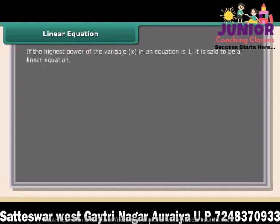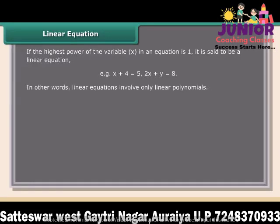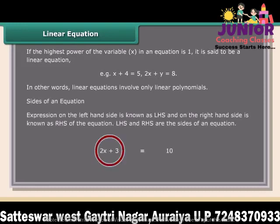If the highest power of the variable x in an equation is 1, it is said to be a linear equation. For example, x plus 4 is equal to 5, and 2x plus y is equal to 8. In other words, linear equations involve only linear polynomials. The expression on the left-hand side is known as LHS and on the right-hand side is known as RHS of the equation.